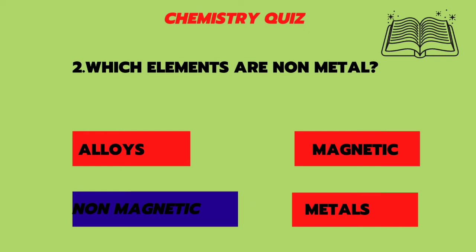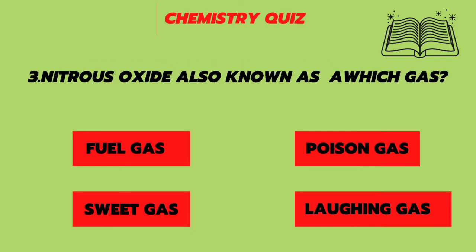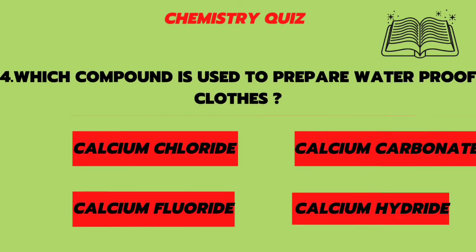Third question: nitrous oxide is also known as — fuel gas, a poison gas, a sweet gas, or a laughing gas? The answer is laughing gas.